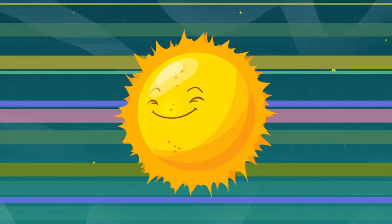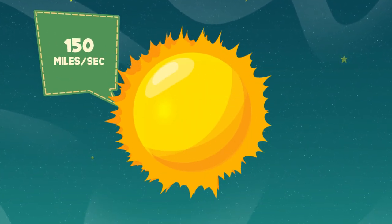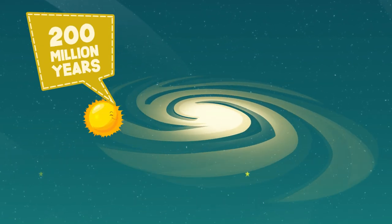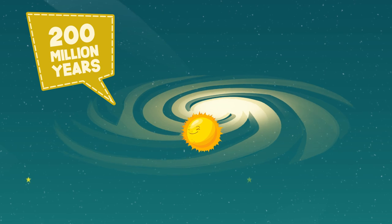In fact, the Sun travels through space at roughly 150 miles per second and takes about 200 million years to complete one revolution around the center of our Milky Way galaxy.